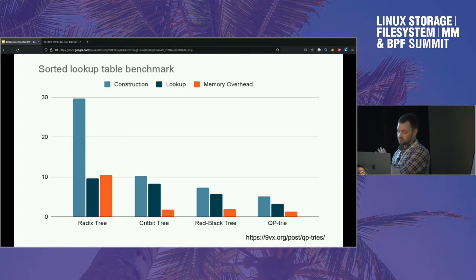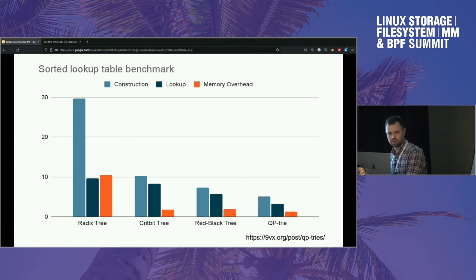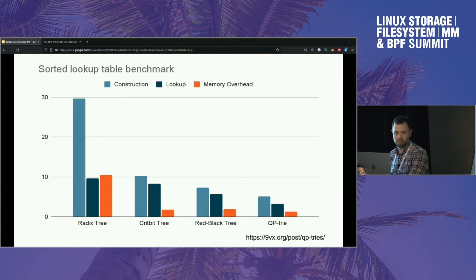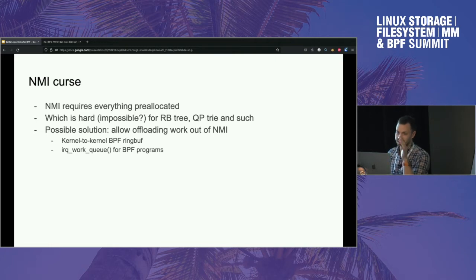Regardless of whether we do red-black tree, QP trie, or both, it would be good to have an implementation that doesn't assume a predefined or pre-allocated maximum size. In addition, we get the ability to have ordered iteration. If you have helpers to get the next key from the BPF side with extended loop support, you can actually traverse your data structure inside the BPF program according to your logic.